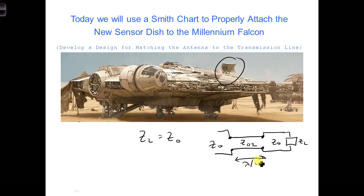However, attaching transmission lines in series is harder for some transmission line geometries than others. Also, Chewbacca doesn't have another type of transmission line available for us to use, which we would need with this Z0,2 section. So we need another option.